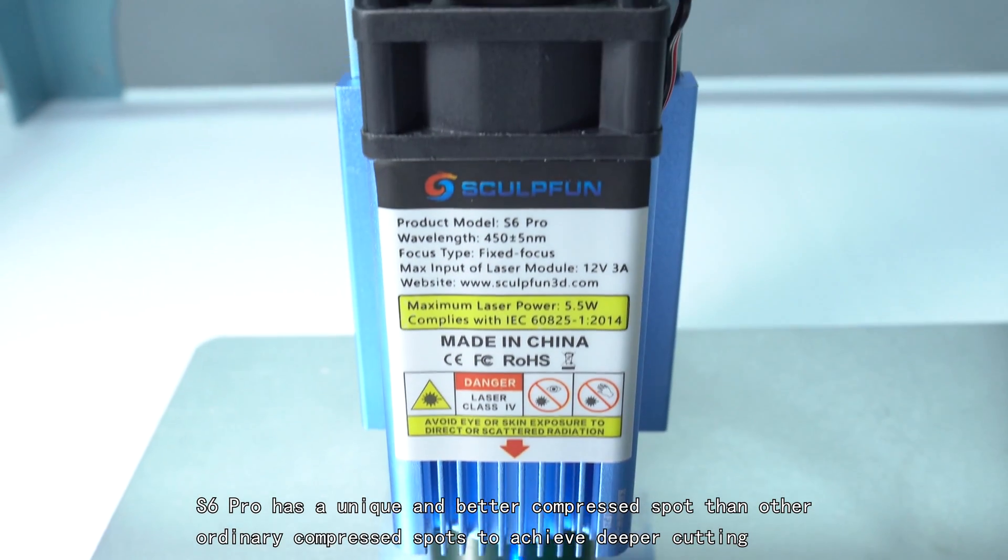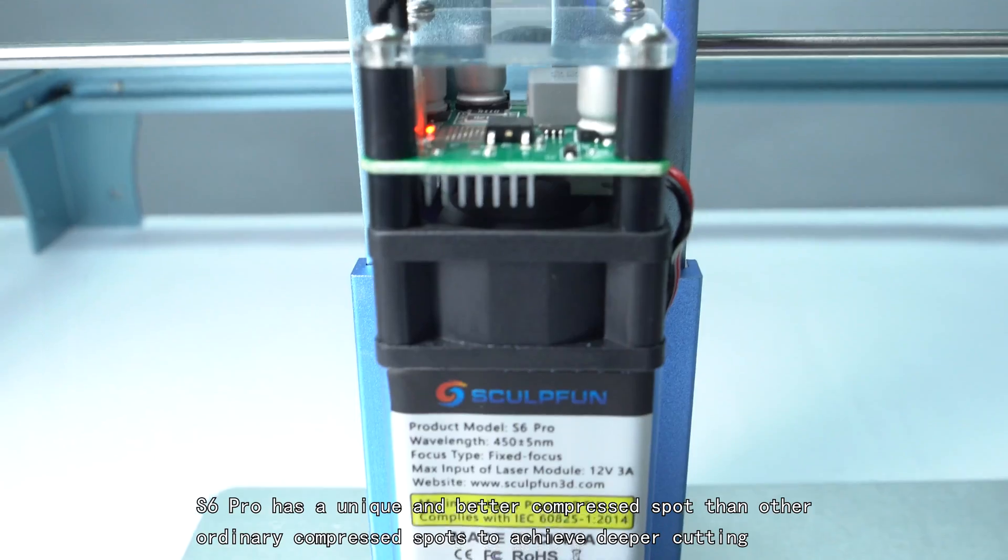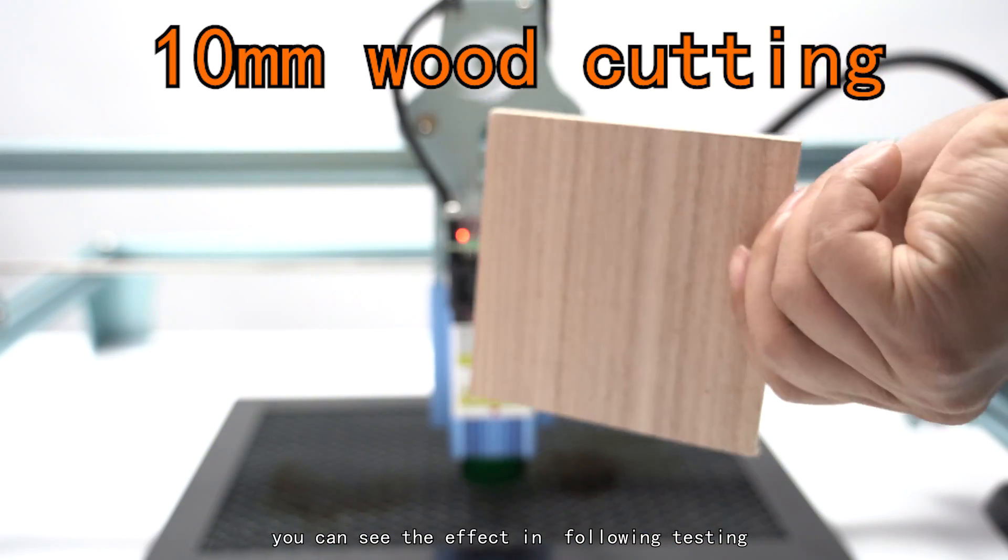S6 Pro has a unique and better compressed spot than other ordinary compressed spots to achieve deeper cutting. You can see the effect in the following testing.